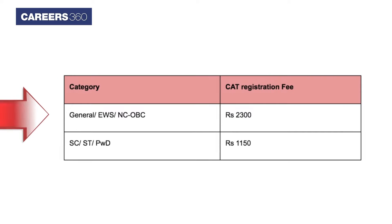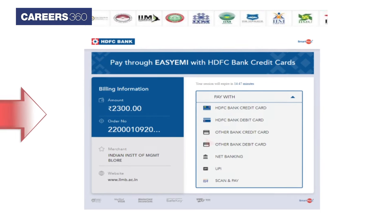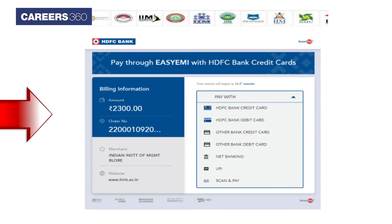Pay the CAT application fee via online mode. The fee for various categories will be Rs. 2300 for General, EWS, NC-OBC category, and Rs. 1150 for SC, ST, and PWD category. The CAT 2022 Payment Partners are PayU and CC Avenue. Choose any of the payment options: Credit Card, Debit Card, Internet Banking, UPI, and Scan and Pay.